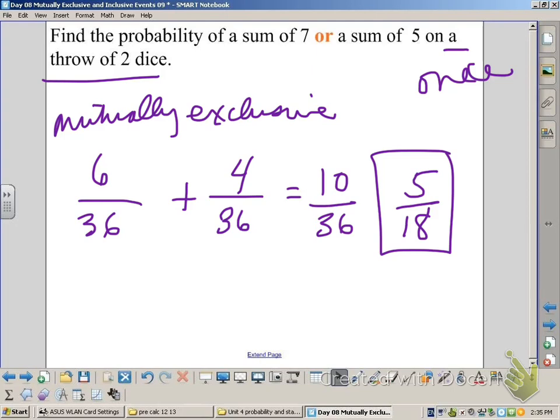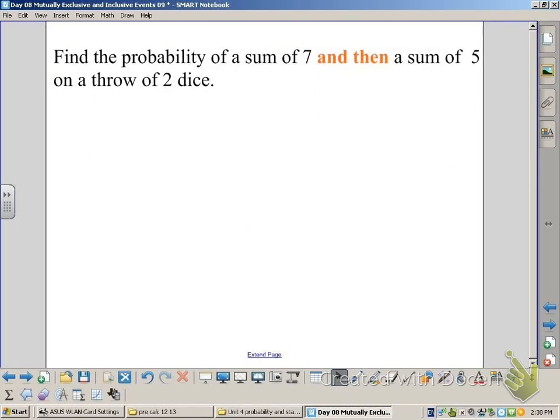Let's look at this problem a different way. This would be an example of the type of problems we've done the previous days. Notice the words and then. This is what makes it like the problems we've done in the past. We're rolling the dice twice. We're looking for a sum of seven on the first roll and then a sum of five on the second.